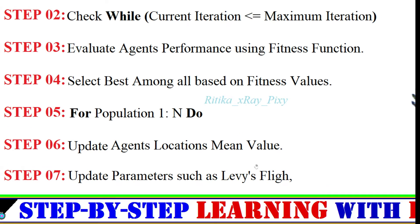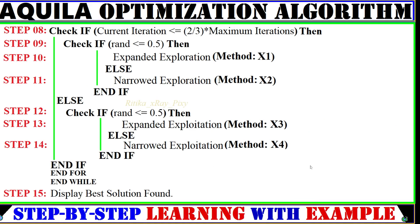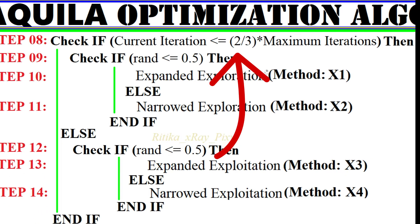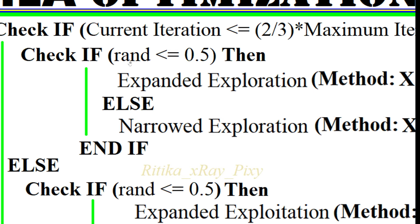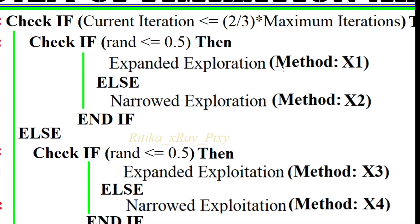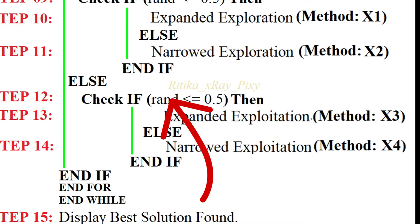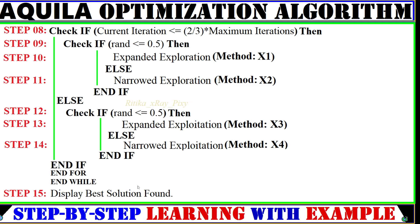Based on their fitness values we select the best agent among all. After that, for all agents we update the mean value, and then update parameters like Levy's flight and others. We then check a condition: if the condition is true we check again — rand here is a normally distributed random value. If this condition is true we use the first method, that is expanded exploration; else we use the second method. If the condition is not true, we use the third and fourth methods. In the end we display the best solution.